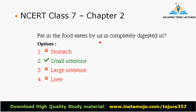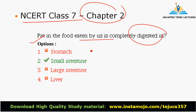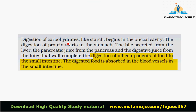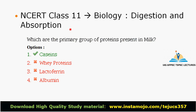Next question: fat in the food eaten by us is completely digested — this is a tricky question. This is NCERT Class 7 Chapter 2. Choose the important key point. The digestion of all components of food takes place in the small intestine. The digestion and absorption is in the blood cells in the small intestine. If there is fat in the food — this is a tricky question.